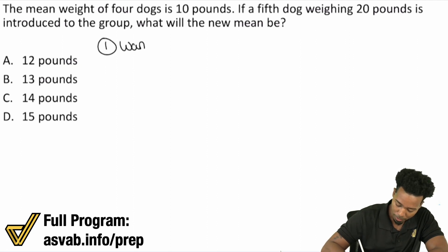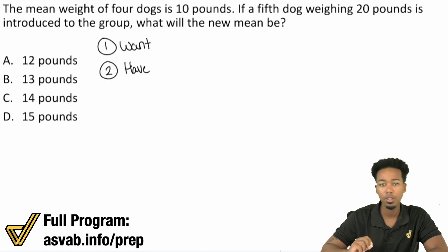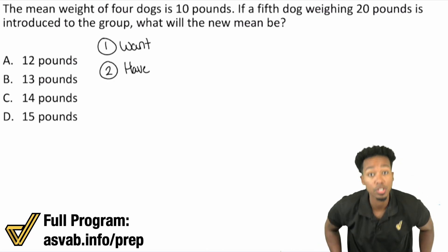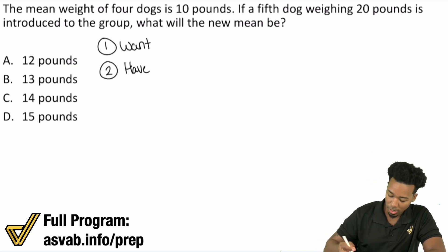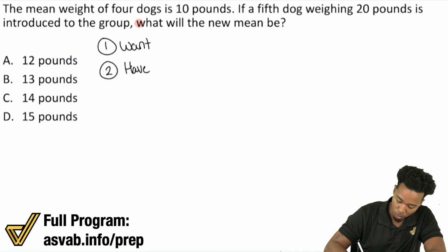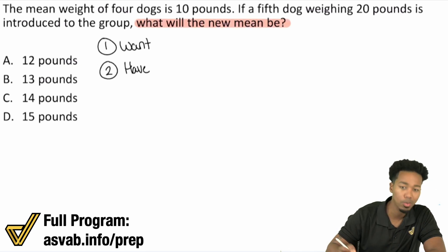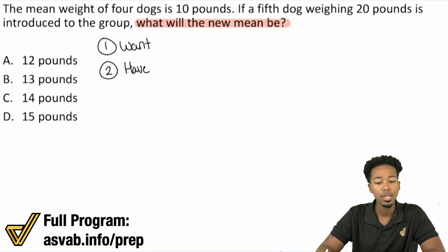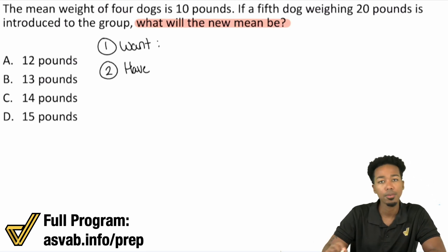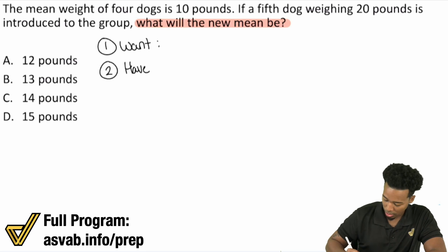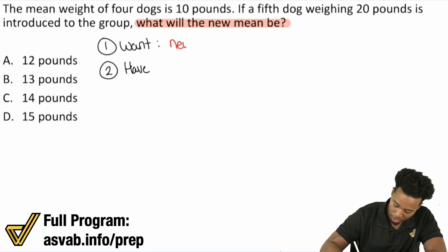What do we want? What do we have? And then we'll work our hardest to figure out what the connection is. What is it that we want in this problem? That's going to start with the question — the who, what, when, where, why, how many, which of the following. What will the new mean be? And as a reminder, mean is the same thing as average. So what we want is the new mean or average.